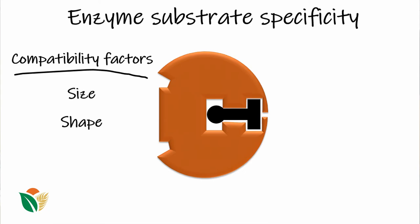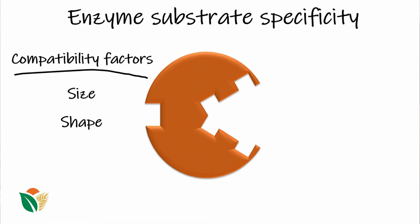What can also happen is that sometimes during evolution, amino acid changes can occur within the active site, and we get a substitution with another amino acid. This changes the shape of the catalytic site, therefore no longer making it compatible with what its initial substrate was, so you won't get any catalytic reaction occurring.